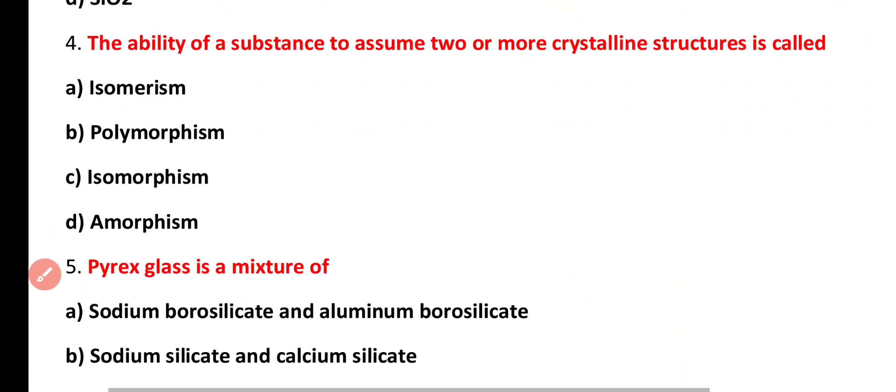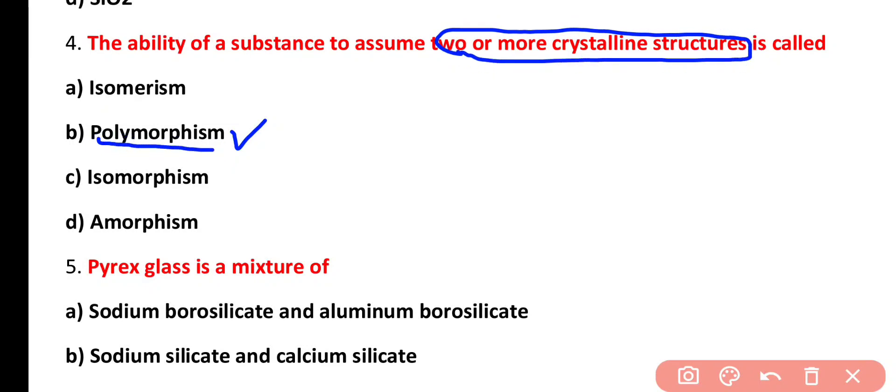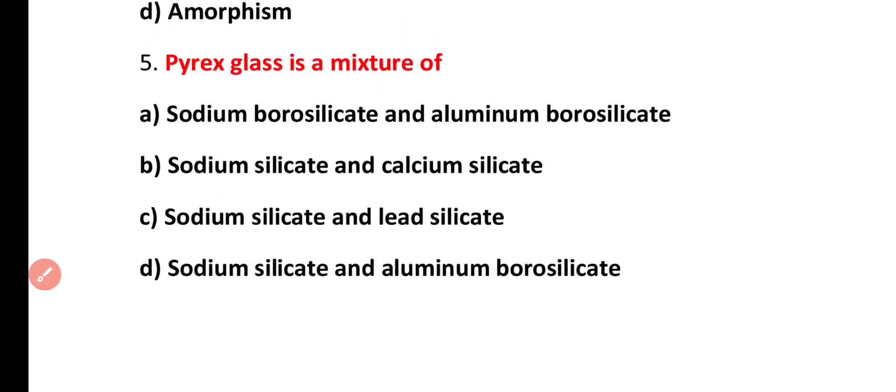Question number 4. The ability of a substance to assume two or more crystalline structures is called isomerism, polymorphism, isomorphism, or amorphism. Correct answer is option B. If a substance exists in two or more crystalline structures, then this process is known as polymorphism.